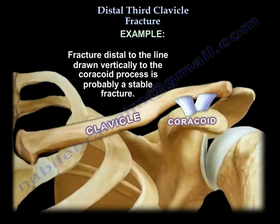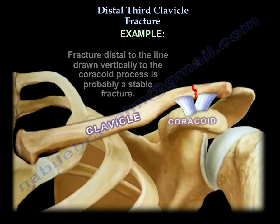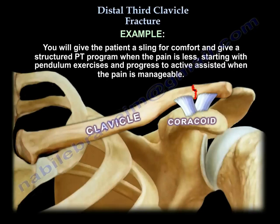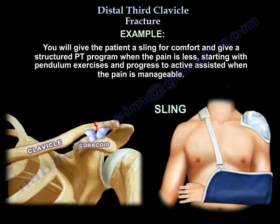A fracture distal to a line drawn vertically to the coracoid process is probably a stable fracture. You give the patient a sling for comfort and a structured physical therapy program when the pain is less, starting with pendulum exercises and progressing to active-assisted when the pain is manageable.